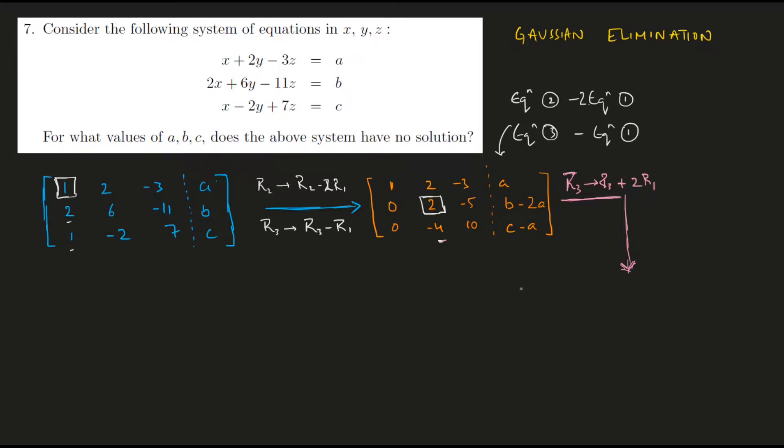So this would turn out to be 1, 2, minus 3, A; 0, 2, minus 5, B minus 2A; and finally this would be 0, this would become 0 because that's what we wanted, and it just so happens that this also becomes 0, and on the right hand side we have C minus A plus 2B minus 4A.